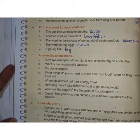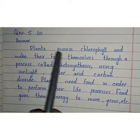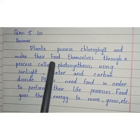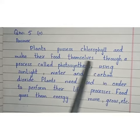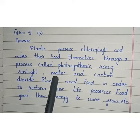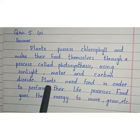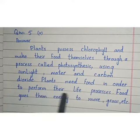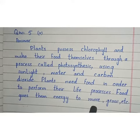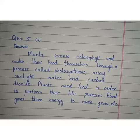The answer is: plants possess chlorophyll and make their food themselves through a process called photosynthesis, using sunlight, water, and carbon dioxide. Plants need food in order to perform their life processes — food gives them energy to move, grow, etc. Let's start the explanation.